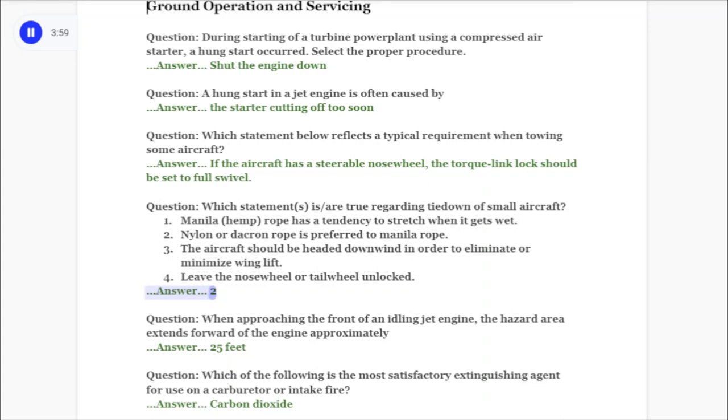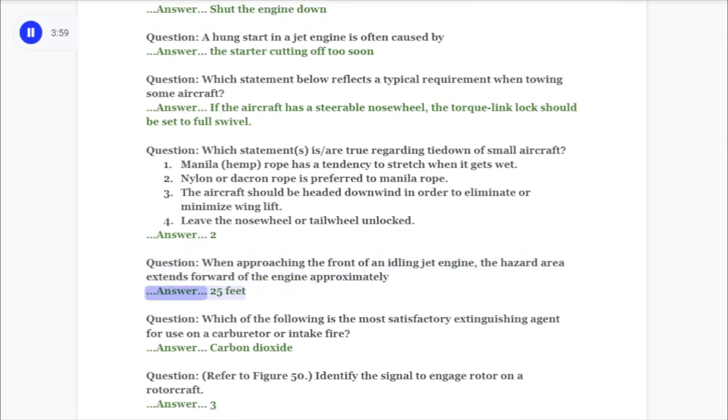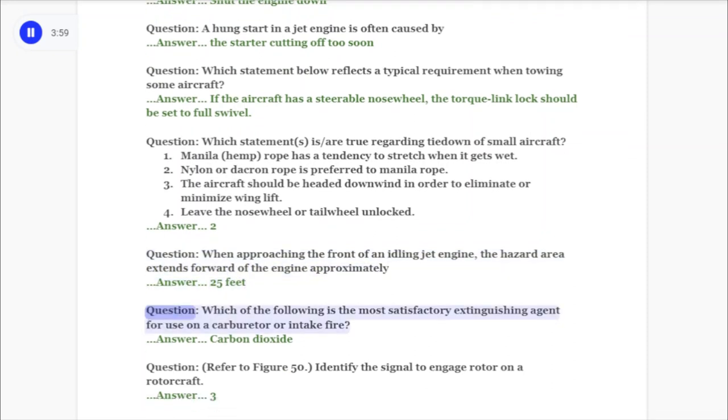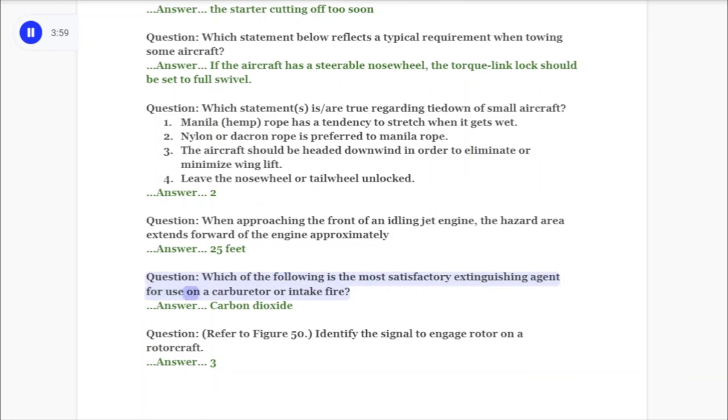Question: When approaching the front of an idling jet engine, the hazard area extends forward of the engine approximately? Answer: 25 feet. Question: Which of the following is the most satisfactory extinguishing agent for use on a carburetor or intake fire? Answer: Carbon dioxide.